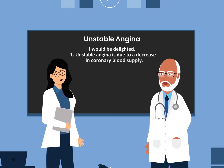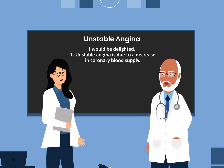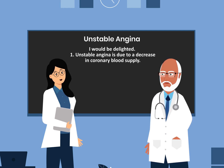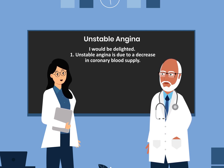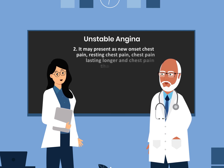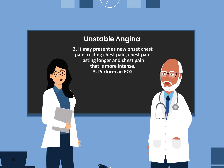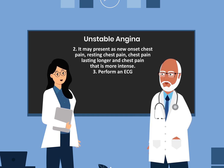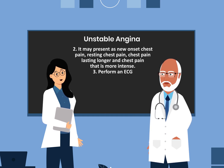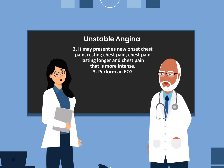I would be delighted to summarize. First, unstable angina is due to a decrease in coronary blood supply. Secondly, it may present as new onset chest pain, resting chest pain, chest pain lasting longer than before, and chest pain that is more intense.